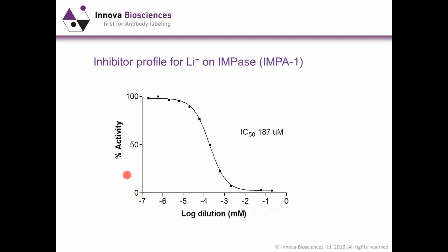This is just an example of the data you would get using malachite reagents in a drug screening setup. This is inositol monophosphatase enzyme with lithium as the known inhibitor, and we get a typical dose-response curve with IC50 as expected.